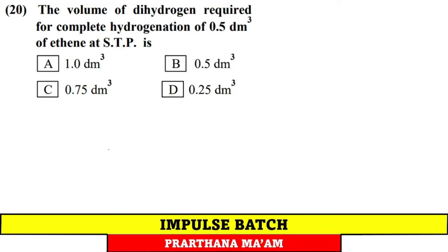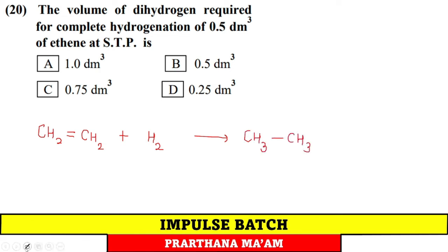Question 20: What volume of dihydrogen is required for complete hydrogenation of 0.5 dm³ of ethene? Reaction: C₂H₄ + H₂ → C₂H₆. One volume reacts with one volume, so 0.5 dm³ H₂ is required. Option B.